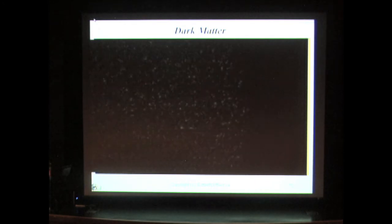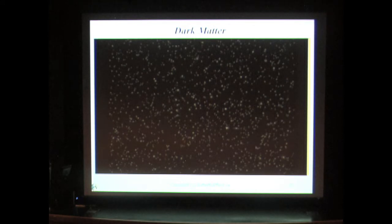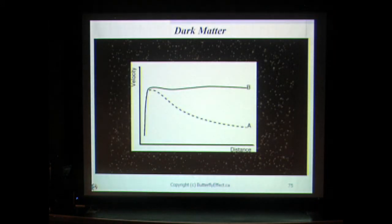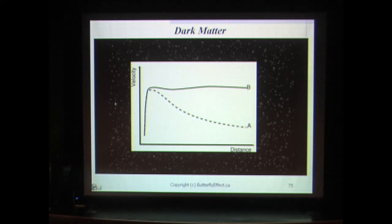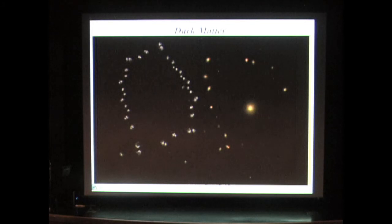Dark matter need not exist in my model. In my model, strange attractors cause matter to self-organize into the various complex shapes of stars and galaxies. It's the strange attractor that continues to bind these things together over time. That's why galaxies rotate the way they do — because the black hole strange attractor is binding the galaxy together as if it were one unit, and so it rotates as one, contrary to standard model predictions. That's also why galaxy clusters don't fly apart as the standard model would have them do, because the complex strange attractor that caused the galaxy cluster to form in the first place is binding it together in that configuration over time. No dark matter required.